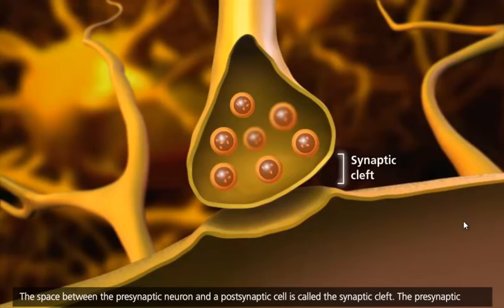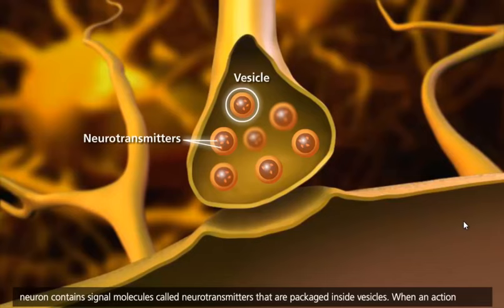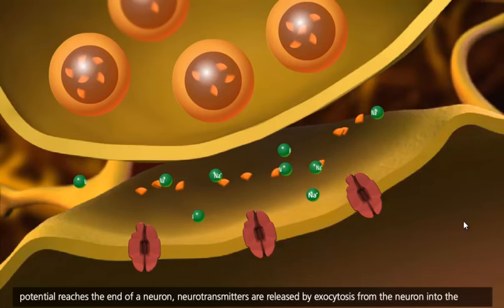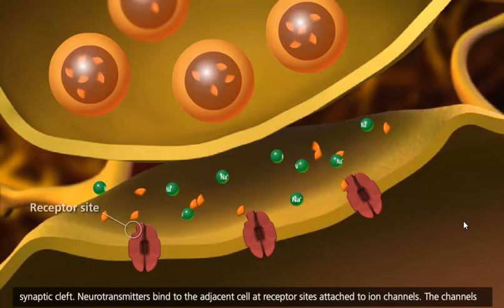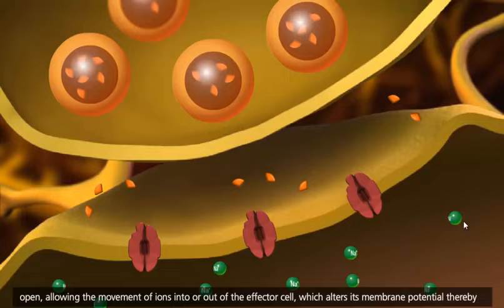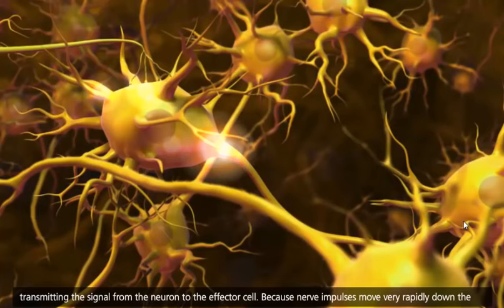The presynaptic neuron contains signal molecules called neurotransmitters that are packaged inside vesicles. When an action potential reaches the end of a neuron, neurotransmitters are released by exocytosis from the neuron into the synaptic cleft. Neurotransmitters bind to the adjacent cell at receptor sites attached to ion channels. The channels open, allowing the movement of ions into or out of the effector cell, which alters its membrane potential, thereby transmitting the signal from the neuron to the effector cell.